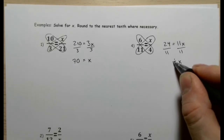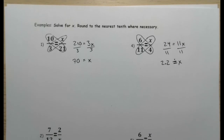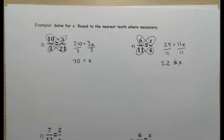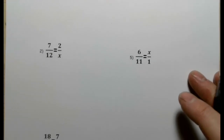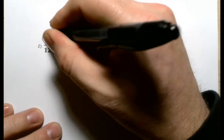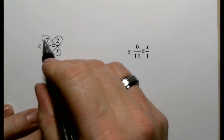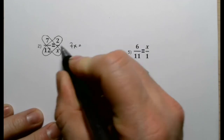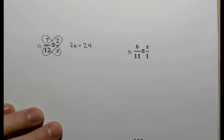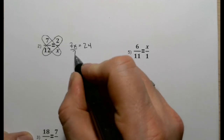Multiplying again along the diagonal: 7 times x is 7x, and 12 times 2 is 24. It doesn't matter what side of the equal sign you put those on — equality means one side equals the other. Divide by the coefficient of x: that gives 1 times x on the left. 24 over 7 is not exact, so approximately 3.4. And for 6 over 11 equal to 0.5 over x — it's close and rounds to 0.5.